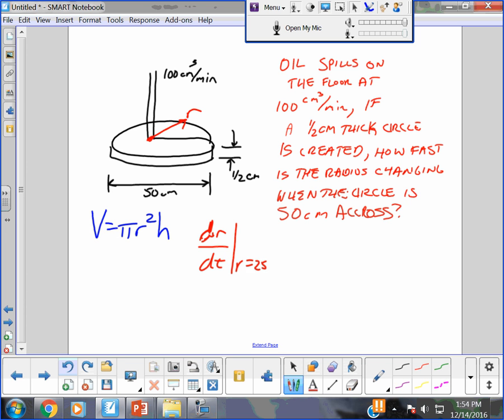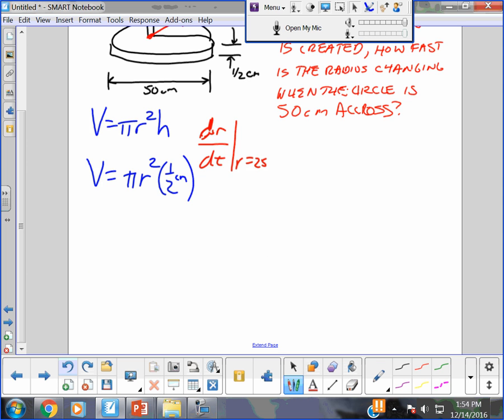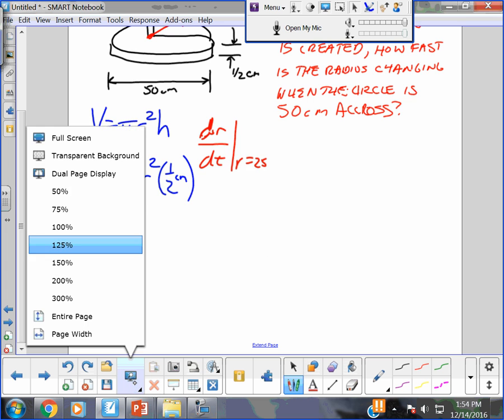Is h changing? No. H is a constant. So in this case, because it's not changing, we can actually change the formula for this case into that. The volume of the puddle is changing. The radius is changing. But that thickness, it's always a half inch thick. Due to the properties I've defined for the oil in this problem.